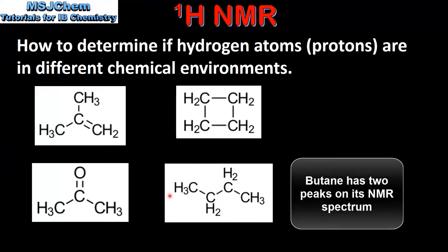Next we look at butane. In butane we have two CH3 groups and two CH2 groups. If we look at the two CH3 groups we can see they are both bonded to a CH2 group, which means the protons in both CH3 groups are in the same chemical environment. The two CH2 groups are also bonded to the same groups of atoms: the CH2 group on the left is bonded to a CH3 group and a CH2 group, and the CH2 group on the right is also bonded to a CH3 group and a CH2 group. Which means the protons in both CH2 groups are in identical chemical environments.